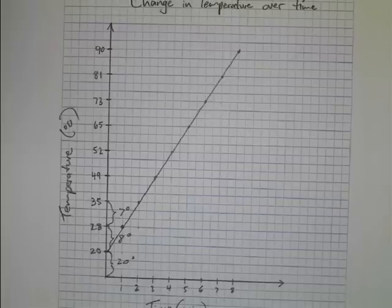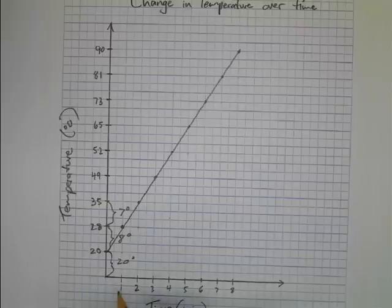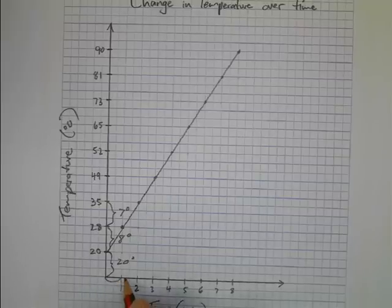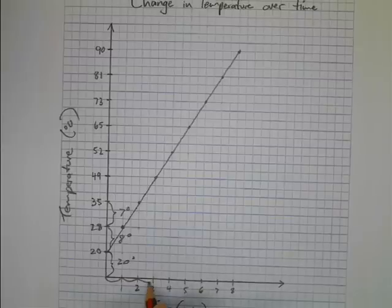In most graphs the scale needs to be nice and consistent like it is down here. Down here from each of these points from one to the next there's a difference of 1 degree.